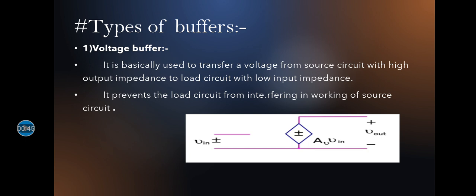So what types of buffers do we have? We have basically two types: voltage buffer and current buffer. First, the voltage buffer is basically used to transfer voltage from source circuit with high output impedance to load circuit with low input impedance. It basically prevents the load circuit from interfering in working of source circuit.